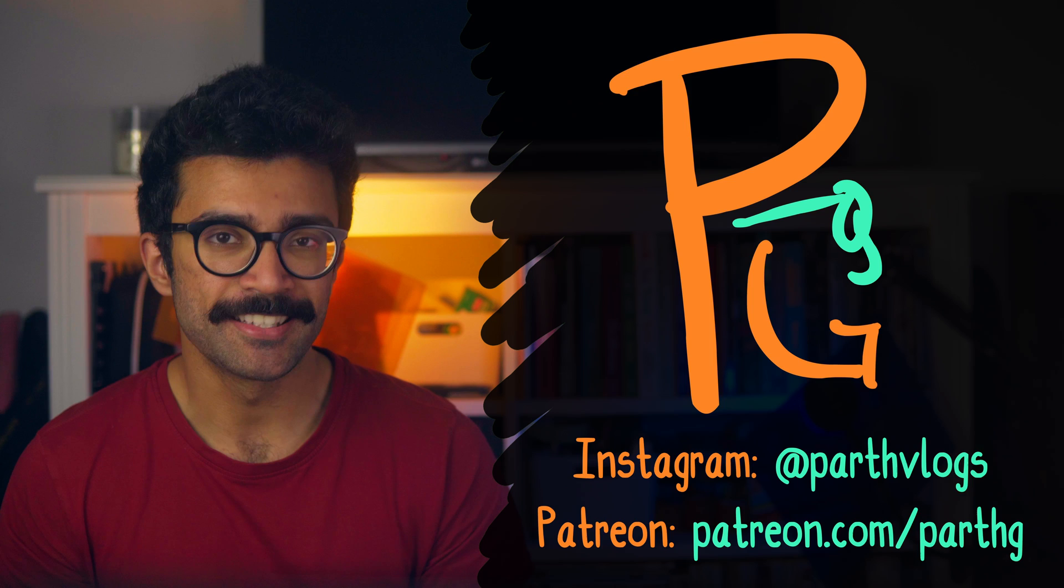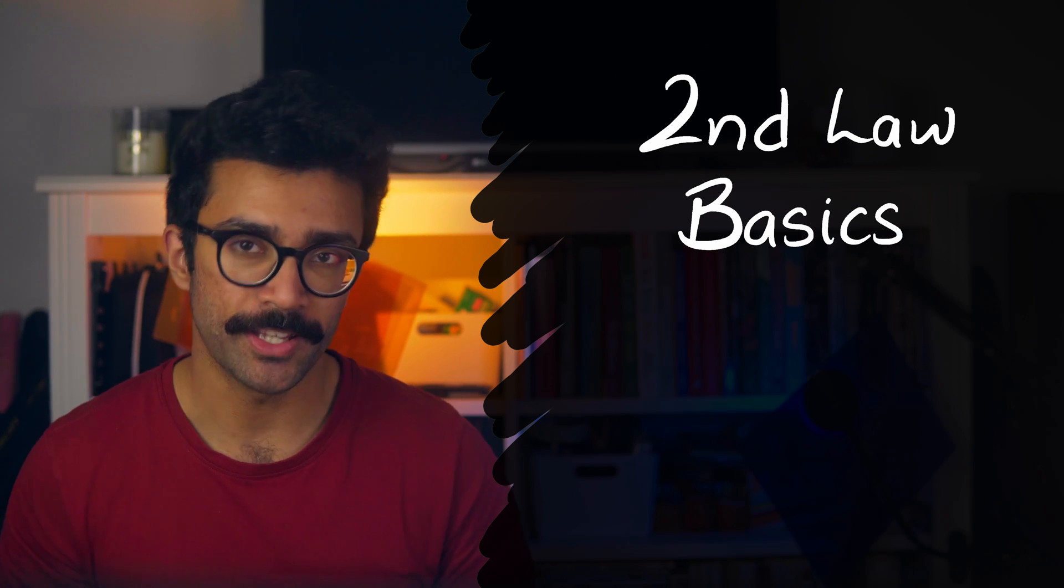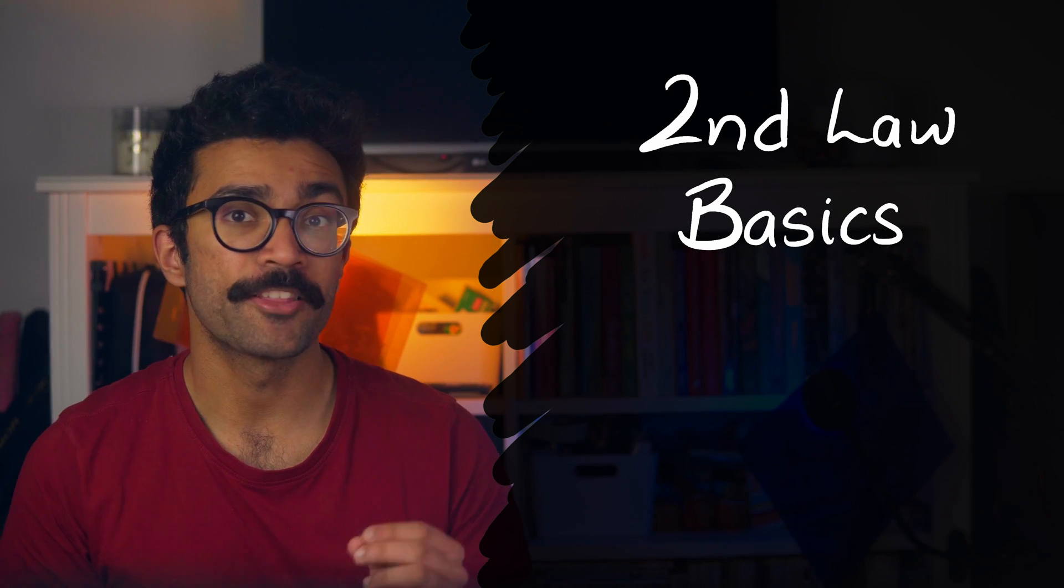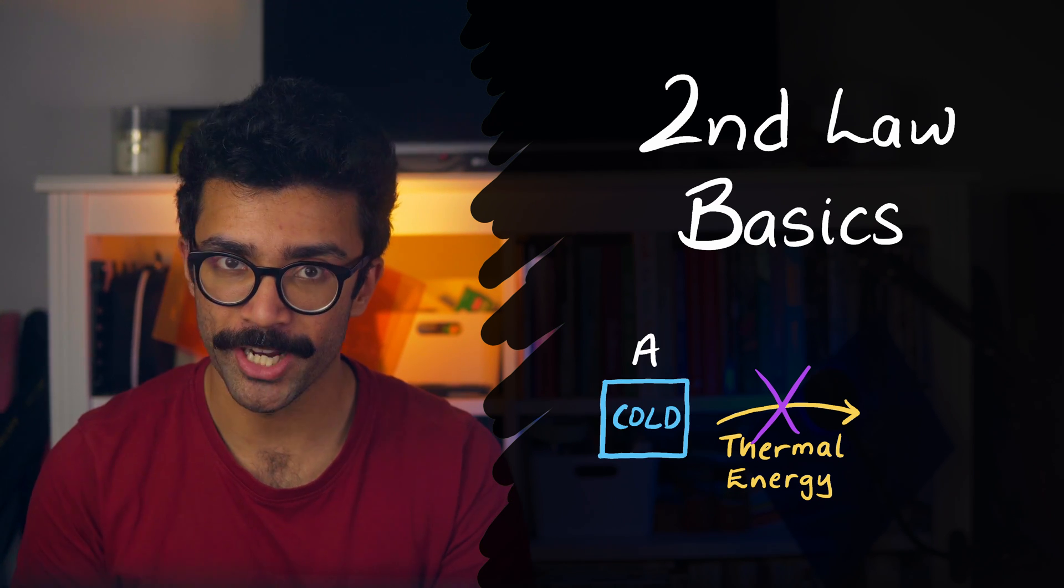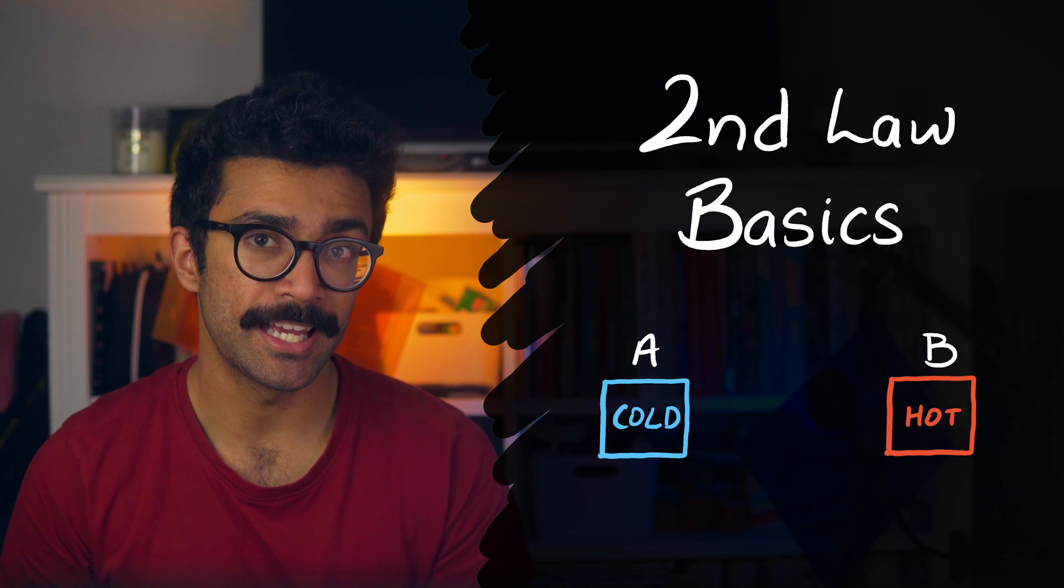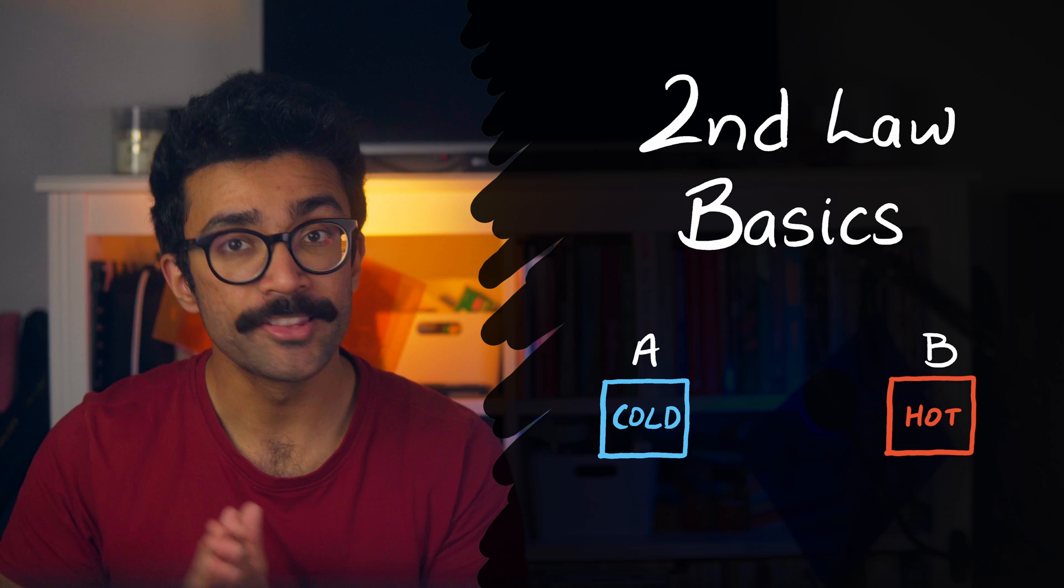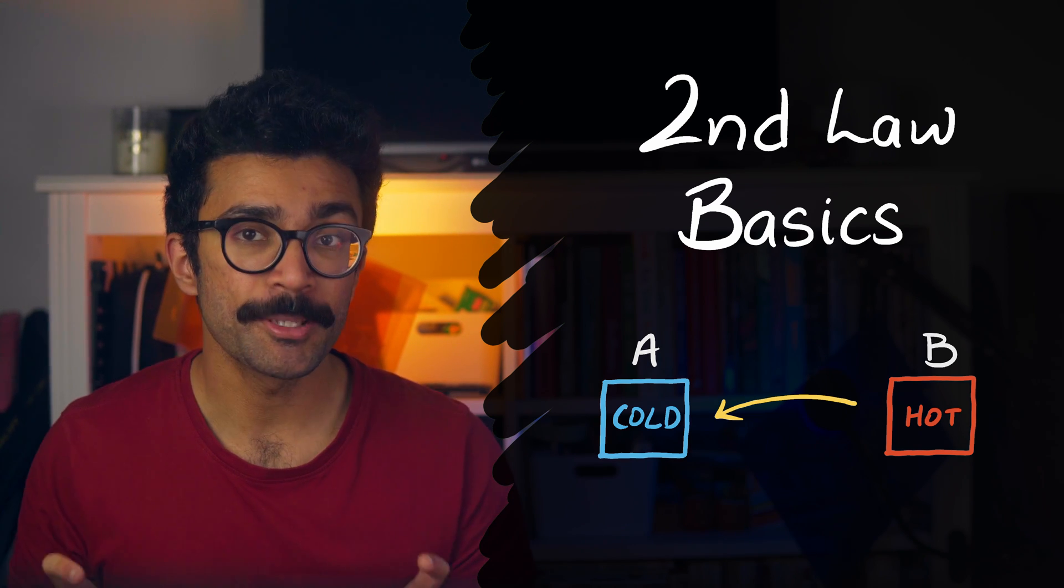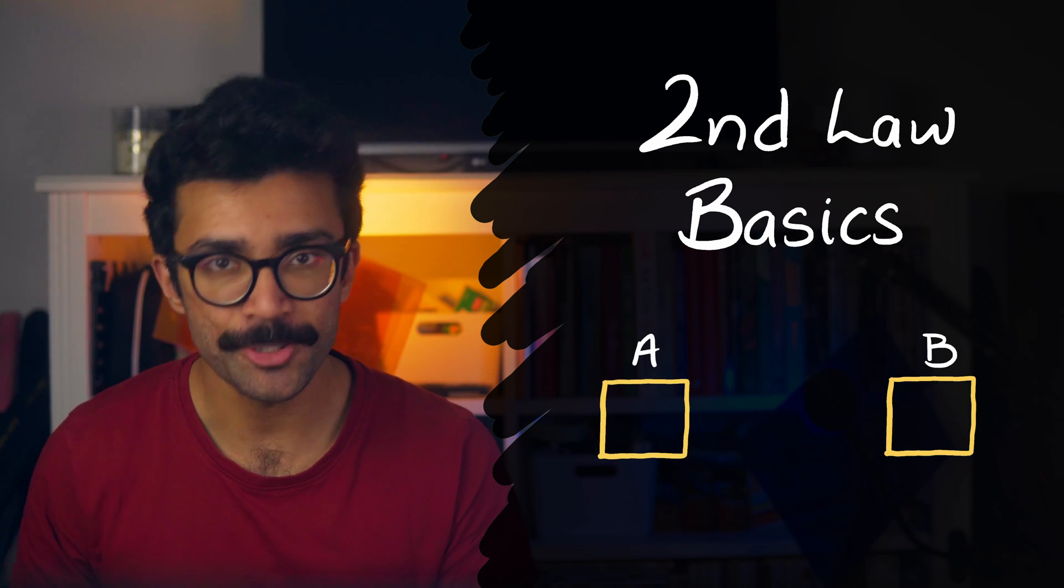There are a few different ways to understand the second law of thermodynamics, all of which are basically equivalent to each other. But in my opinion, the simplest statement of this law says that thermal energy does not spontaneously go from a colder object to a hotter object. Basically if we have two objects A and B at different temperatures, and then we connect them together, then thermal energy will flow from the hotter object to the cooler object until they both reach thermal equilibrium, at some temperature between their initial temperatures.